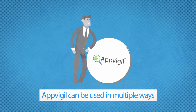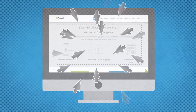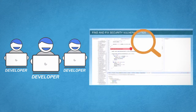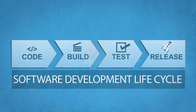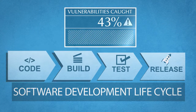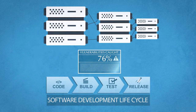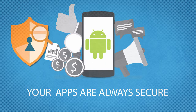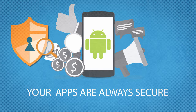AppVigil can be used in multiple ways for a hassle-free experience. You can scan your apps via our website for quick results. Also, your developers can scan the Android apps they're building via our Eclipse plug-in without any distraction, with just a keystroke. And the best way to automate the vulnerability testing is by integrating AppVigil with your continuous integration servers like Jenkins. This will add a security layer on the SDLC of your company to make sure that your apps are always secure against deadly attacks.